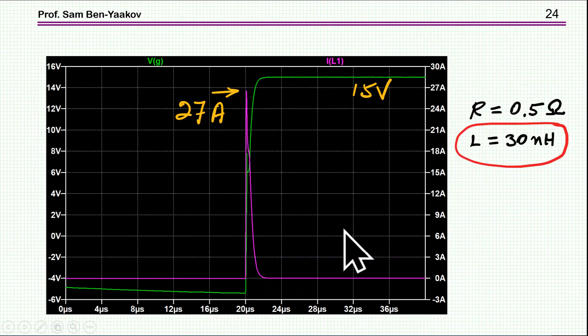Now, if I lower the inductance to something more reasonable, like 30 nanohenry, the gate is very nice, and I get here 27 amp because of the lower inductance, which is kind of reasonable. It's not 50, but 27 amp is really nice.